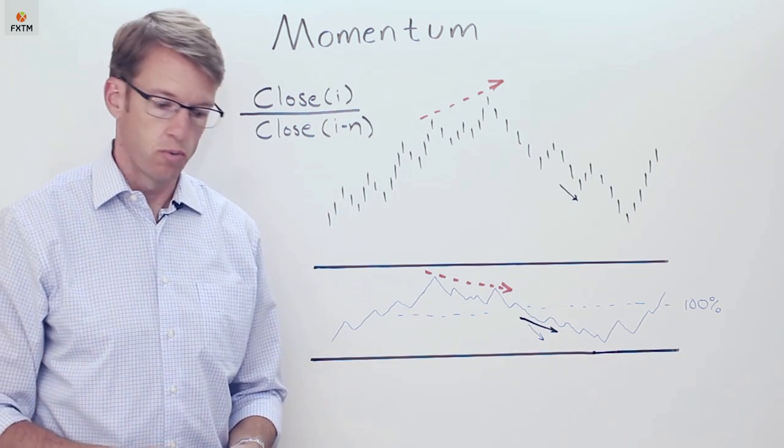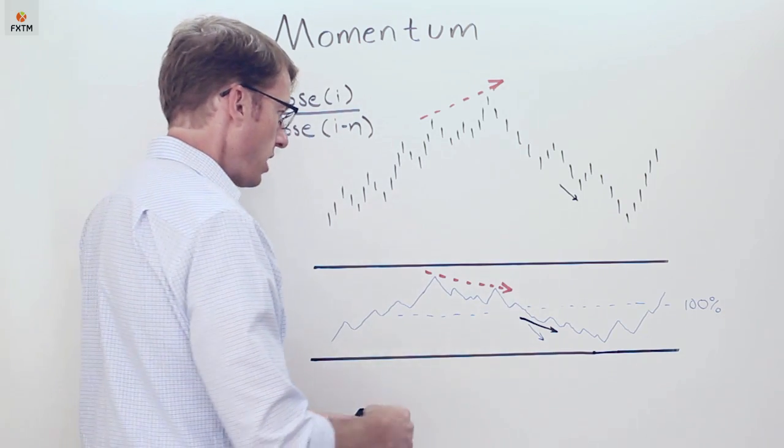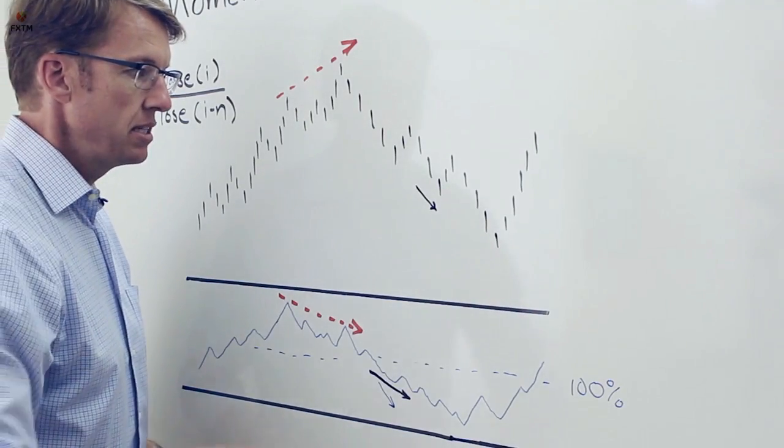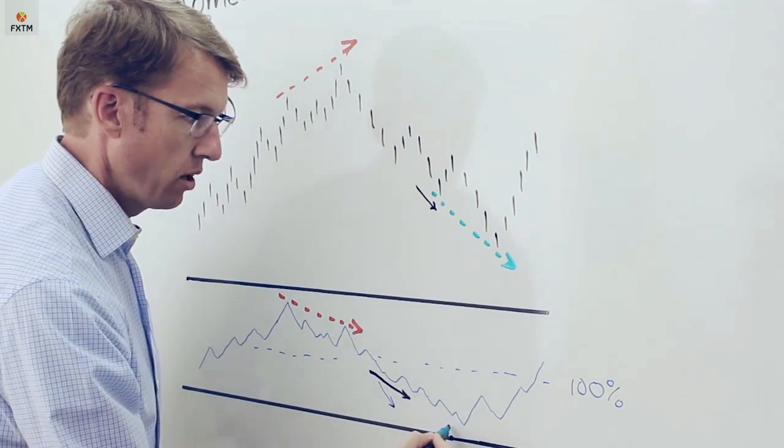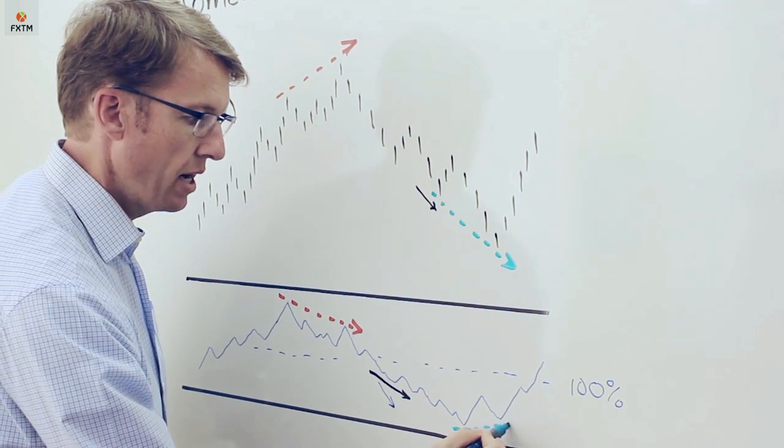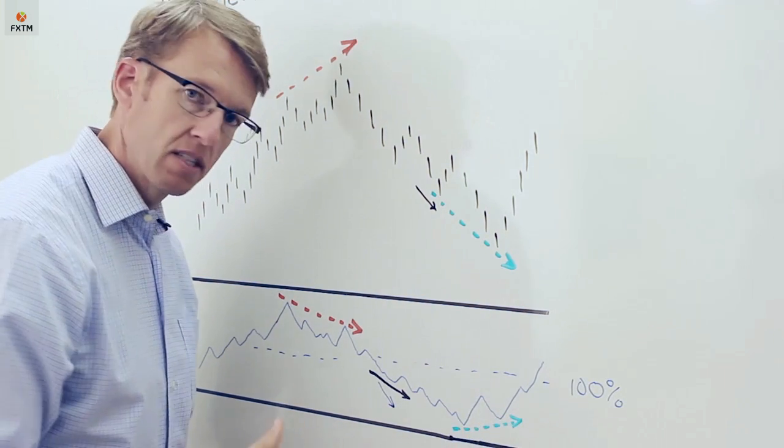Now the opposite can also be true where we can see a situation where the price may be declining so we can see these lower bottoms on the price while at the same time we have rising bottoms on the momentum oscillator.